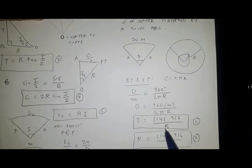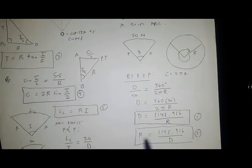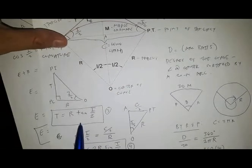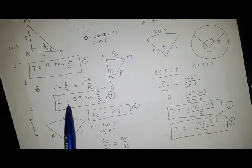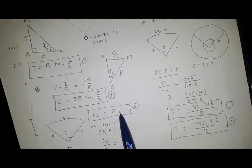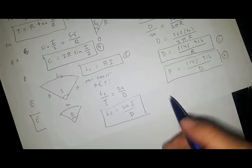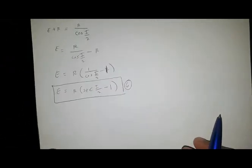To summarize, we have the formula for D given the radius, the formula for R given D, the formula for the tangent T, for the long chord C, for the length of the curve LC (and an alternative LC formula using arc basis), the formula for the external distance E, and the formula for the middle ordinate M.